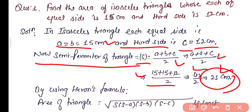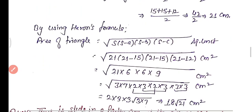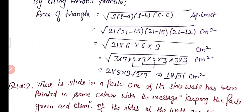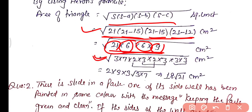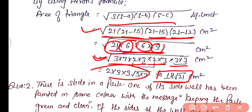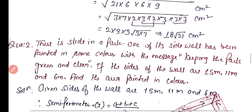Using Heron's Formula, area = √(s(s−a)(s−b)(s−c)). Putting in s = 21, a = b = 15, c = 12: we get √(21 × 6 × 6 × 9). Doing prime factorization of 21, 6, 6, and 9: √(3×7 × 2×3 × 2×3 × 3×3). After simplifying, the area is 18√21 cm². So 18√21 cm² is the area of the given isosceles triangle.